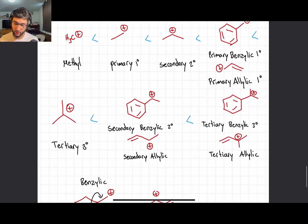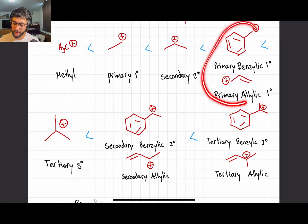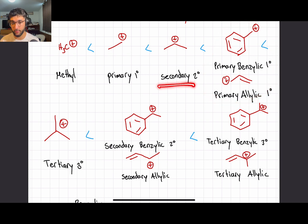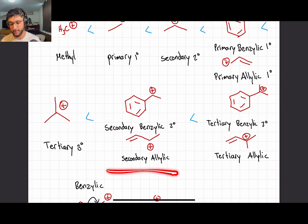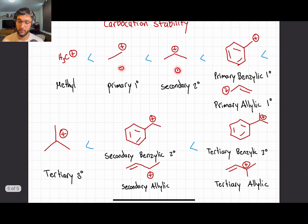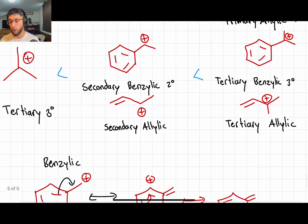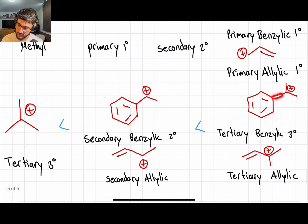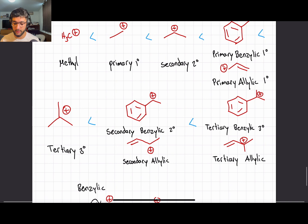To recap the full ranking: primary benzylic and allylic are greater than secondary carbocations but less stable than tertiary. Secondary benzylic and allylic are the second most stable, and tertiary benzylic is the most stable carbocation. These are more stable not only because of the induction effect — where carbons donate electron density to neutralize the positive charge — but also because of resonance. That's why allylic and benzylic carbocations tend to be more stable than regular primary, secondary, and tertiary, with the exception of primary benzylic and allylic versus tertiary.